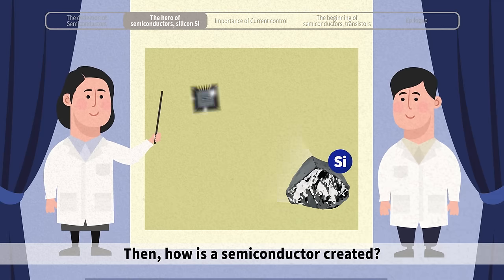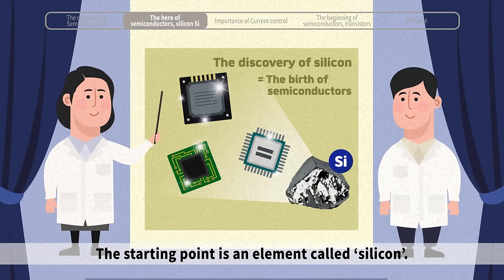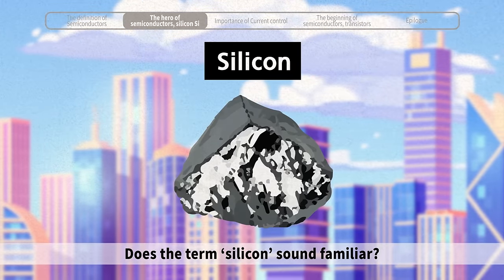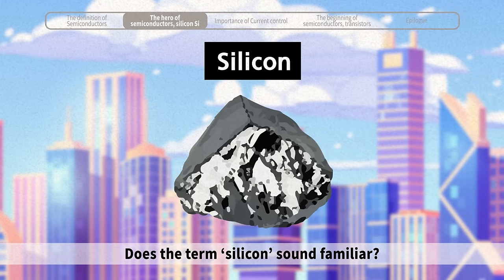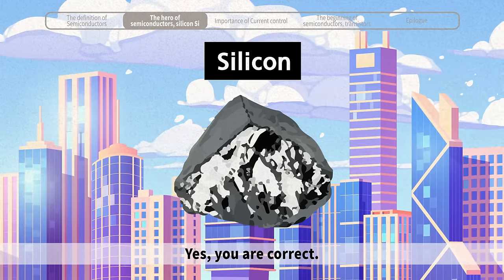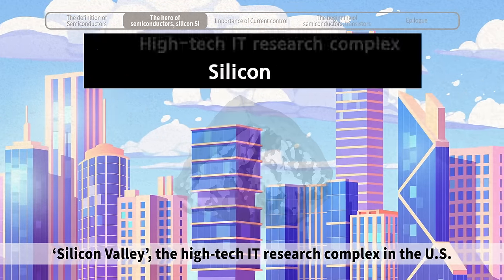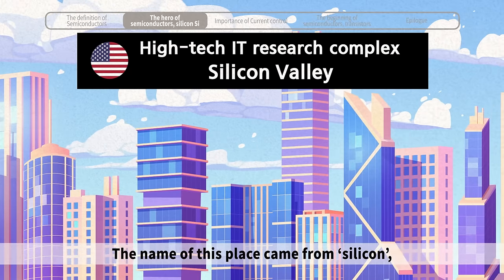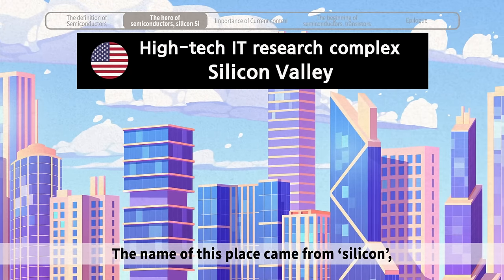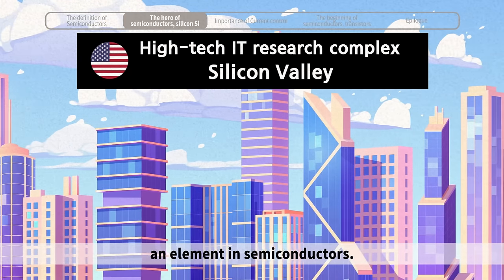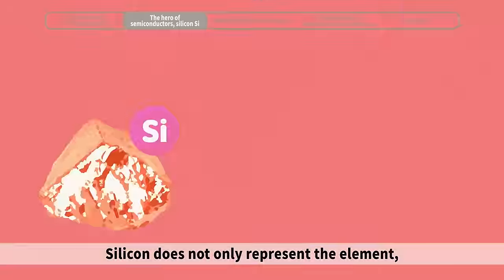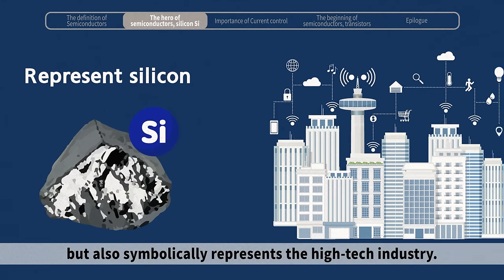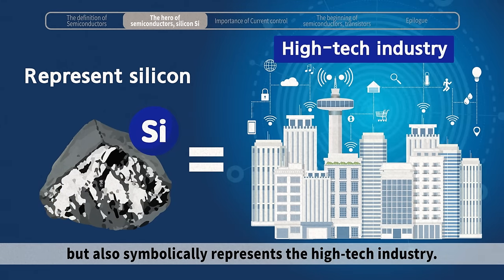How is a semiconductor created? The starting point is an element called silicon. Does the term silicon sound familiar? Yes — Silicon Valley, the high-tech IT research complex in the US. The name of this place came from silicon, an element in semiconductors. Silicon does not only represent the element, but also symbolically represents the high-tech industry.